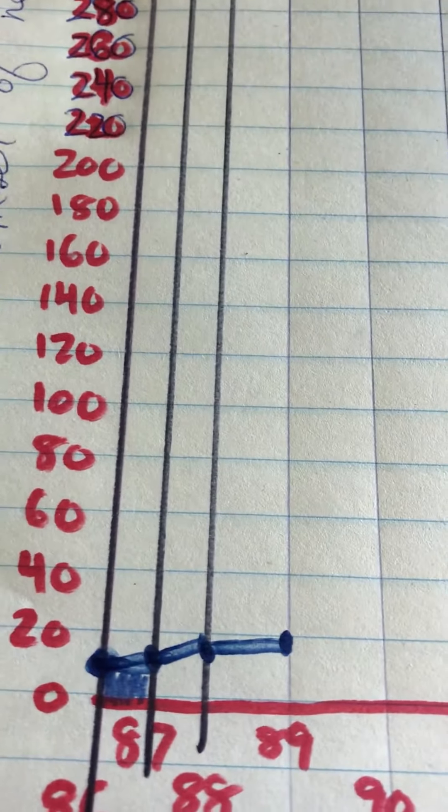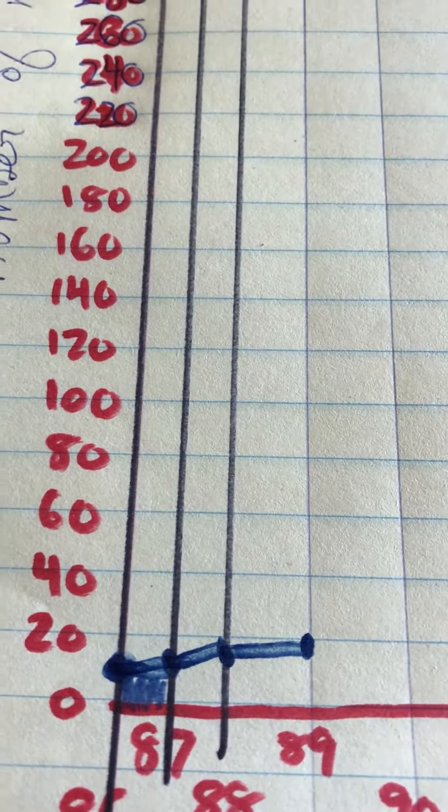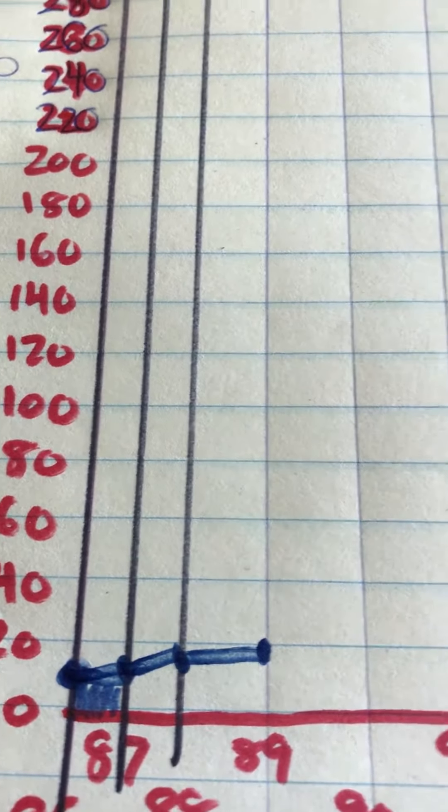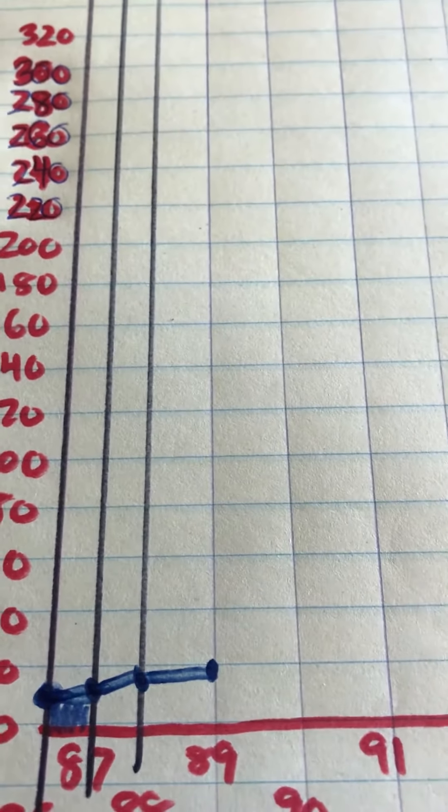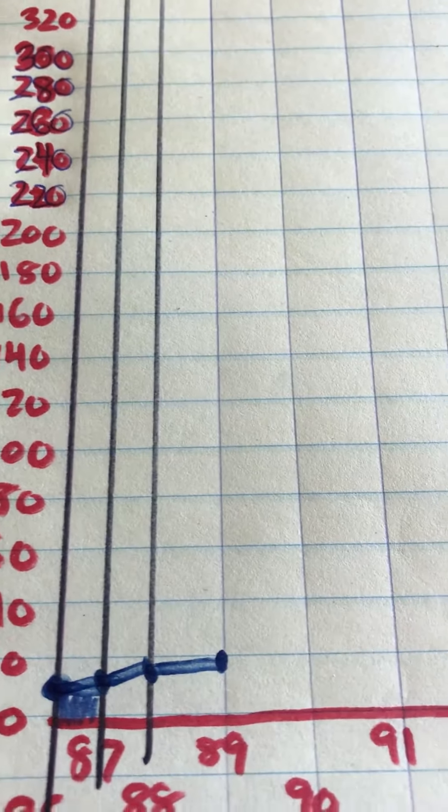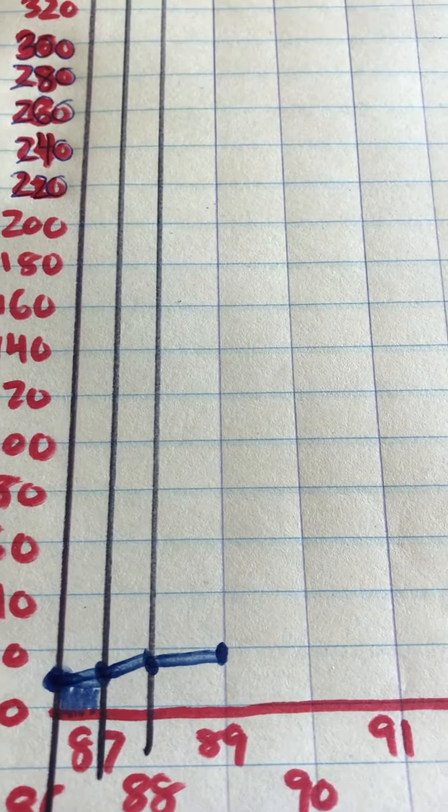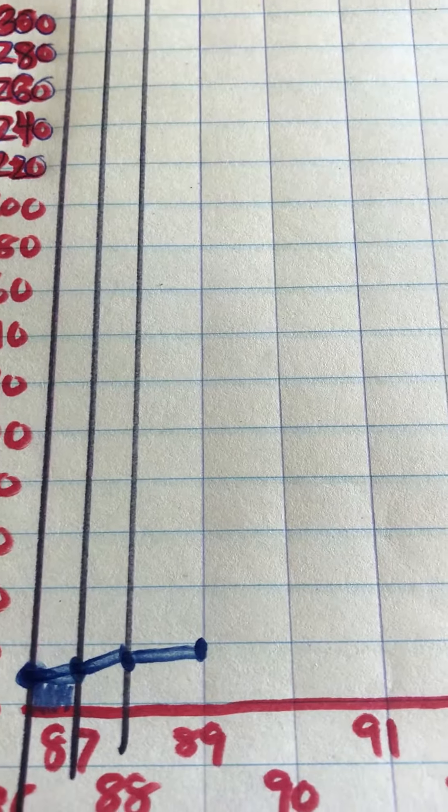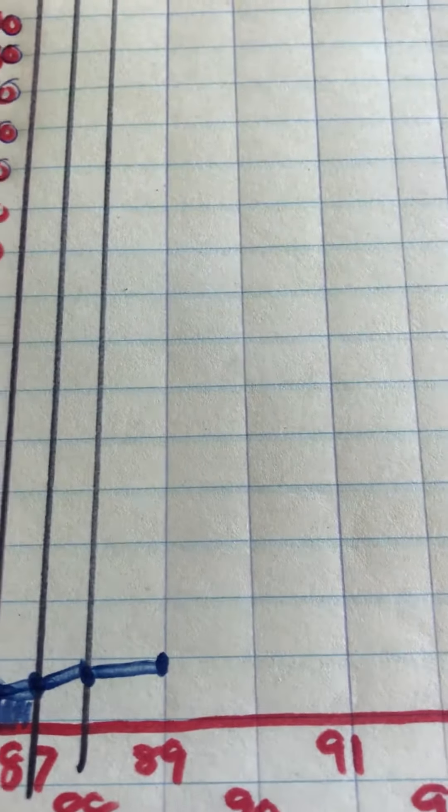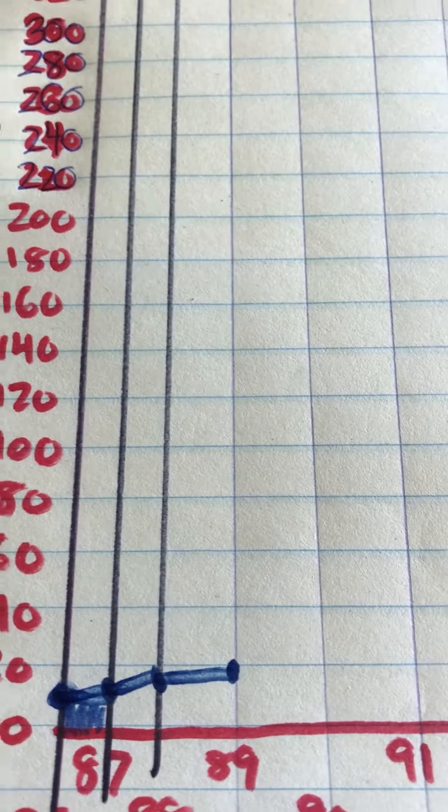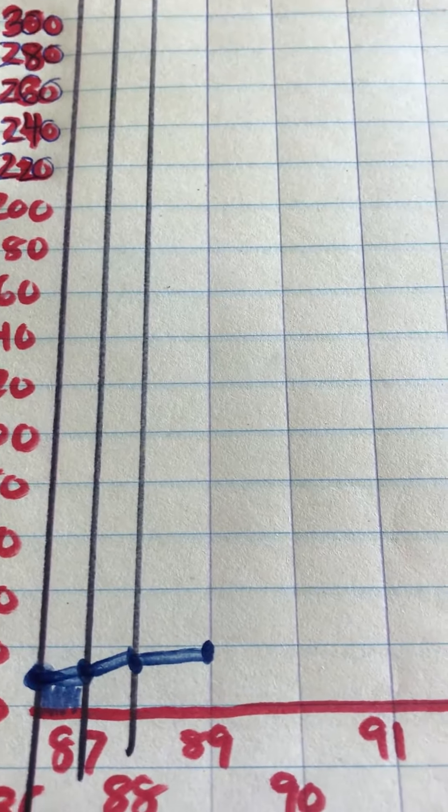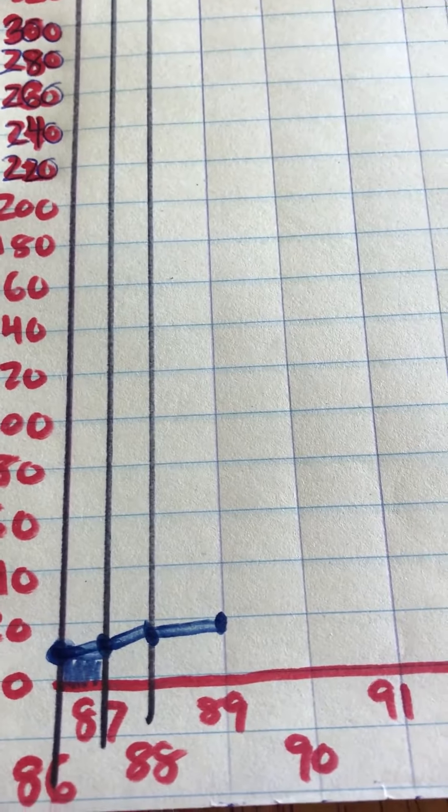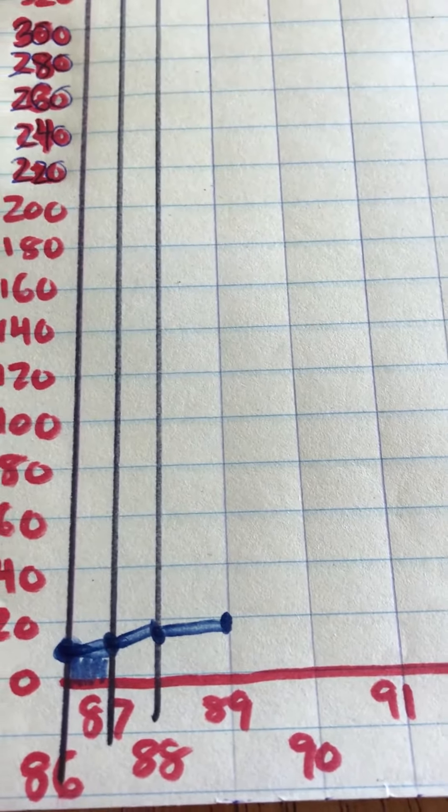Now this is called a line graph, obviously, because it turns into a line. And it also shows a lot of data at a glance. And that's why scientists like to use graphs, because you can get a feeling for the data if things are going up or going down or what's happening. And so that is a very, very quick lesson on making a graph. And I'm sure your parents can help you with this too.